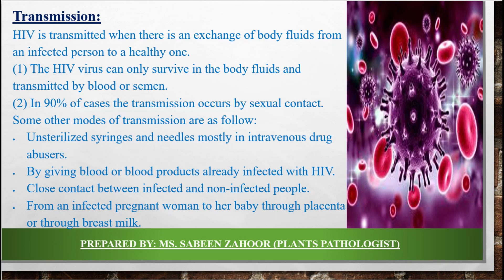How is HIV transmitted? We have to discuss the transmission of HIV. HIV virus is transmitted when there is an exchange of body fluid from an infected person to a healthy one. HIV virus can only survive in body fluid and is transmitted by blood or semen.